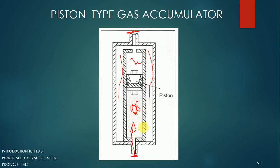When fluid is supplied, the piston starts moving upward, compressing the gas present at the top. As the gas is compressed, it applies force over the piston, and the piston applies force over the oil, which gets pressurized. Whenever we require pressurized oil, it can be removed very easily. This is a separating-type gas accumulator because the gas and oil do not come into direct contact with each other.